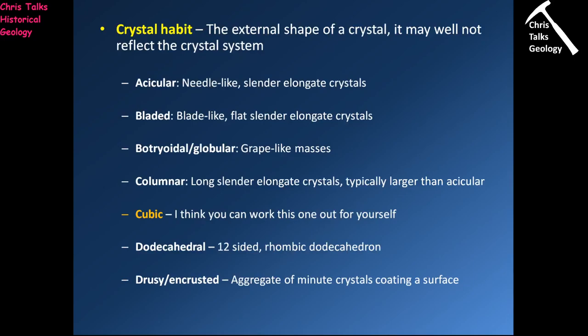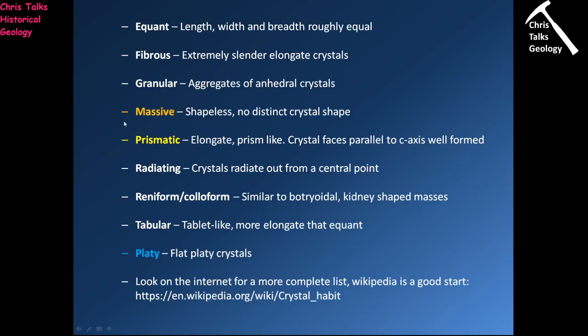In terms of crystal habit, there are many different types, but the main ones you'd come across are: cubic — you can work out what a cubic crystal looks like, it's going to be cube-shaped. Massive — a whole pile of crystals with no real distinct shape, all massed together, referred to as a massive habit.